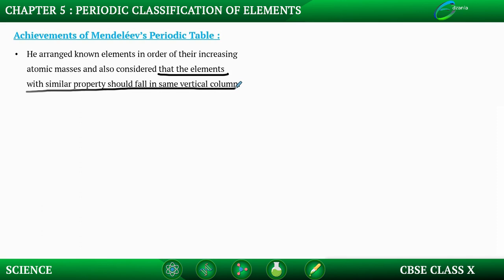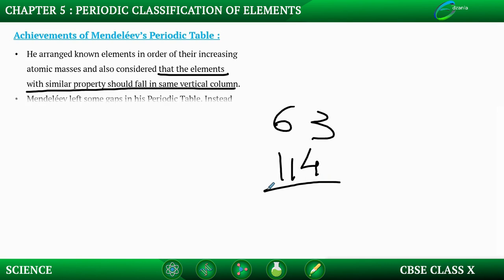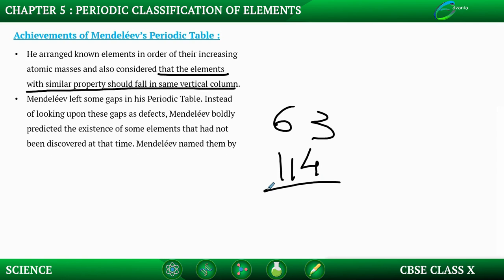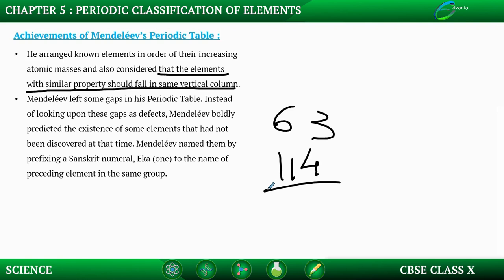Although only 63 elements were known at the time, we now know 114 elements exist. Mendeleev left some gaps in the periodic table, and rather than treating these as defects, he predicted the existence of elements that had not yet been discovered, stating that they would be found later on.